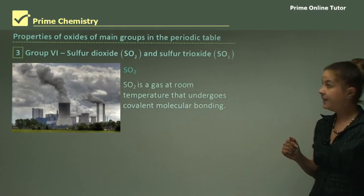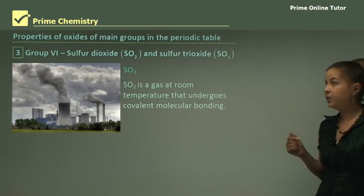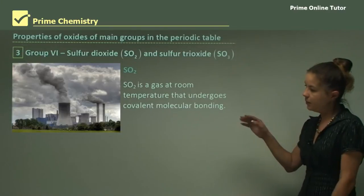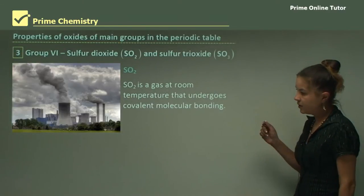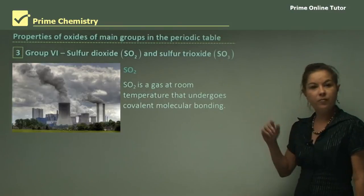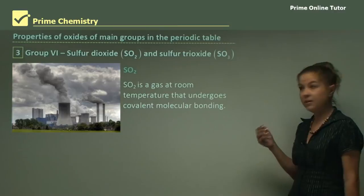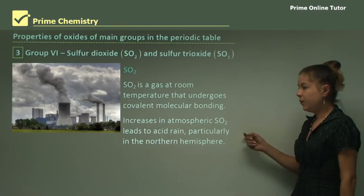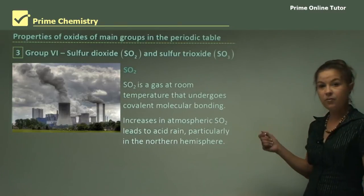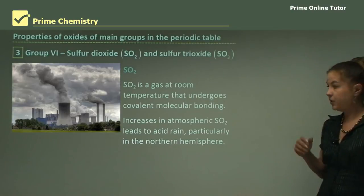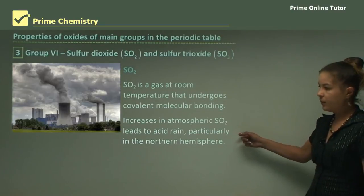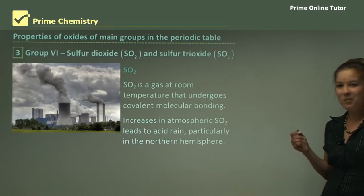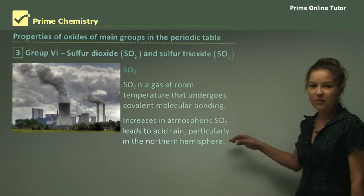Now we move to Group 6, sulfur dioxide and sulfur trioxide. SO2 is a gas at room temperature. As you can see in the picture, that's SO2 gas coming from a factory. It can also come from volcanic vents and thermal baths. It undergoes covalent molecular bonding. Increases in atmospheric SO2 lead to acid rain, particularly in the northern hemisphere, which kills trees and forests and affects buildings. A lot of really old buildings in the northern hemisphere are decaying because of acid rain, which is not good for the environment.